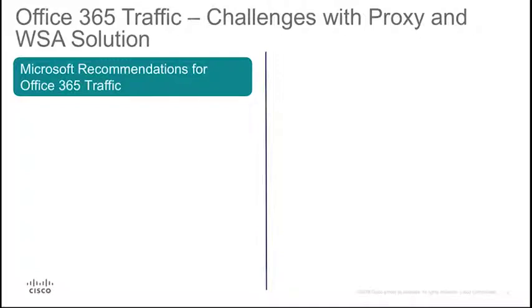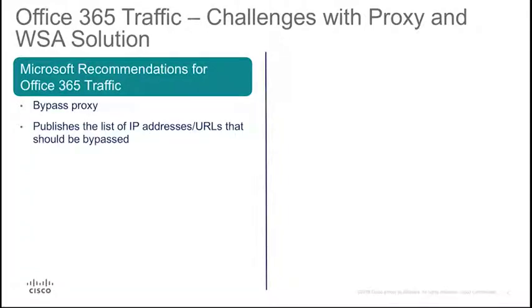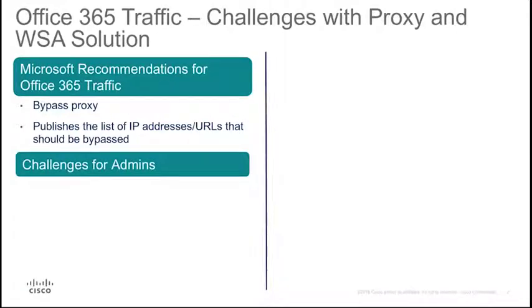Let's examine what are Microsoft's recommendations to organizations in handling Office 365 traffic. Microsoft recommends bypassing proxies wherever possible for Office 365 traffic. Microsoft publishes the list of IP addresses and URLs of the Office 365 servers on the internet so enterprises can bypass the traffic sent to these IP addresses and URLs. But what are the challenges that administrators encounter while configuring this list on proxies in their networks?